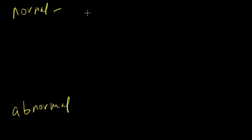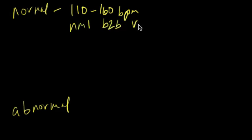Normal means that the rate is within those normal limits. We talked about 110 to 160, and obviously that's beats per minute. We want to have normal beat-to-beat, that's B-to-B, variability.